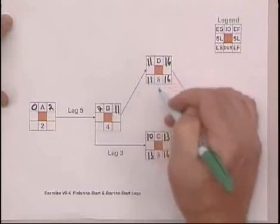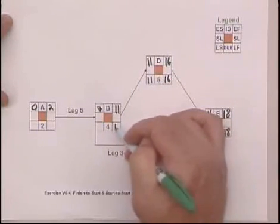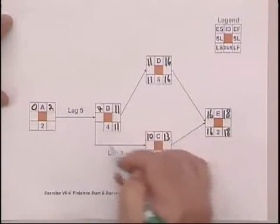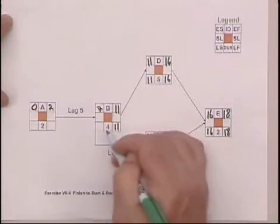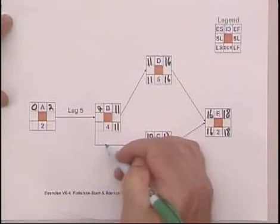Five minus 16 is 11. And that 11 comes down here. Now we have a choice with this start-to-start lag. Four minus 11 is 7.